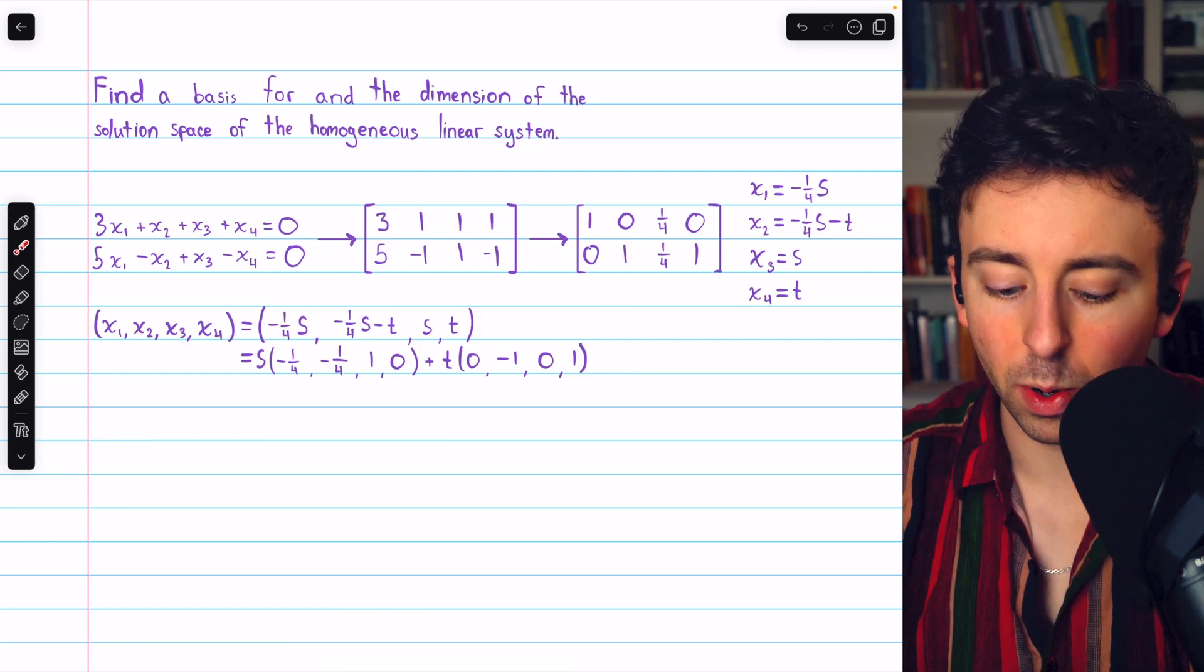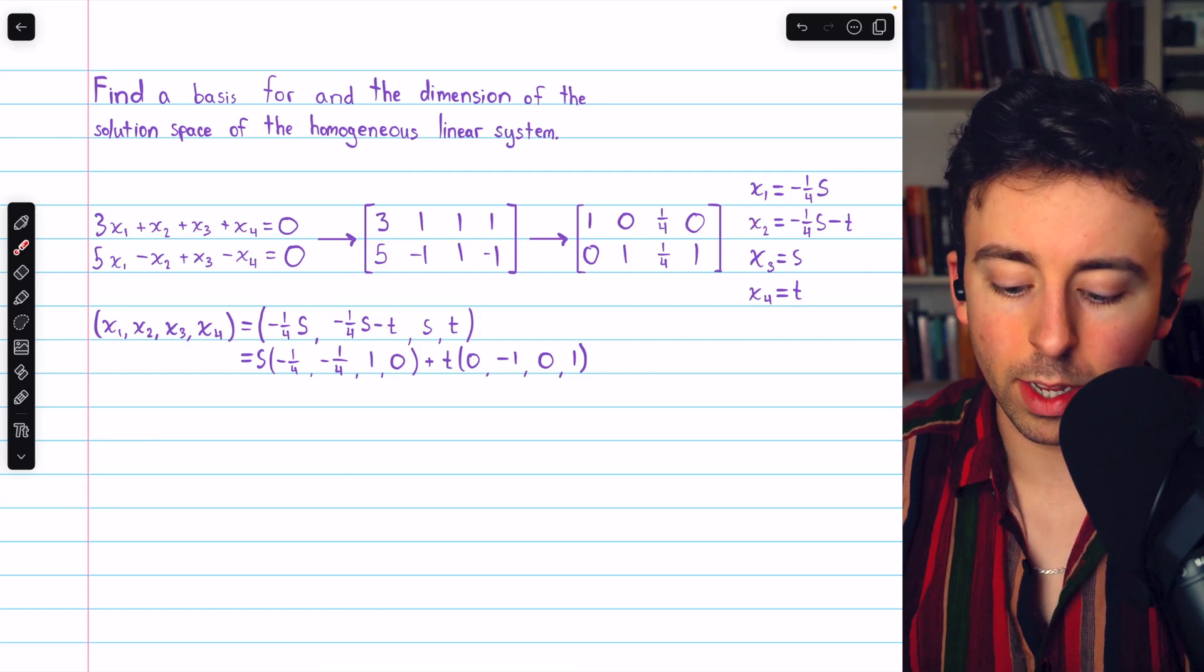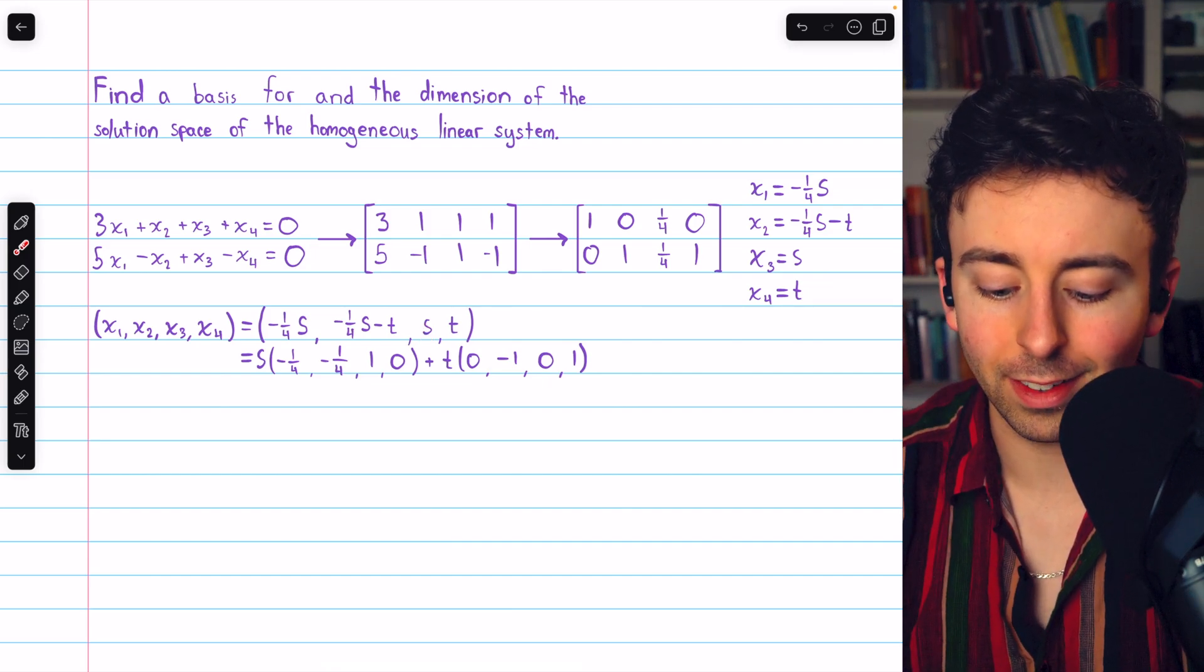x1 has to be negative one-fourth s, x2 has to be this, x3 is a parameter s, and x4 is t.